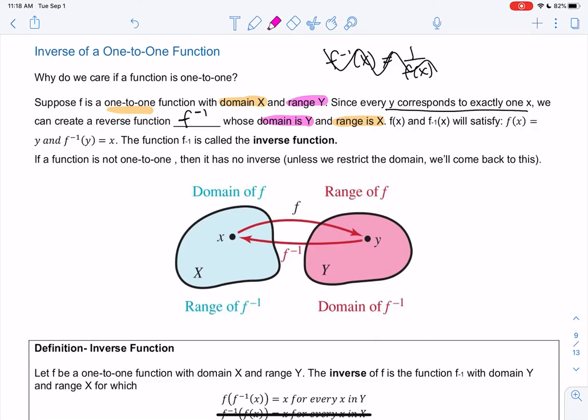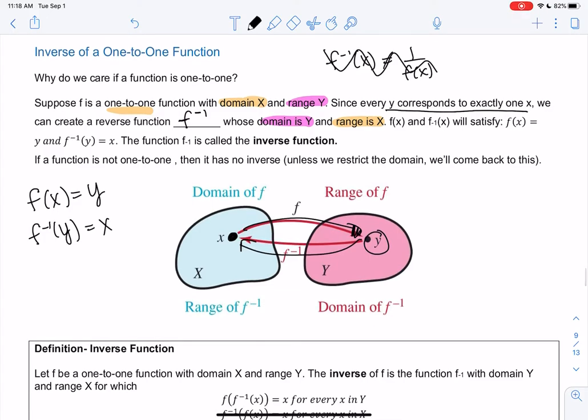f and f inverse will satisfy the equation where f of x equals y. We start with f of x, plug in x, output y, and then the inverse is the opposite—we input y and output x. If it's not one-to-one, we can't do this because the y only has one x-value. We need it to be one-to-one to define an inverse.